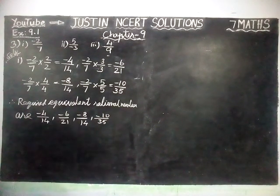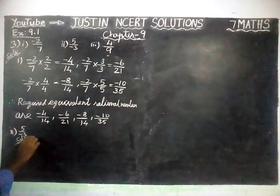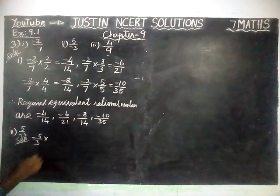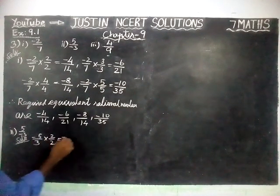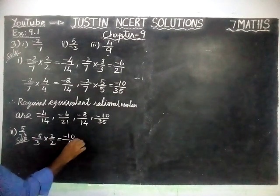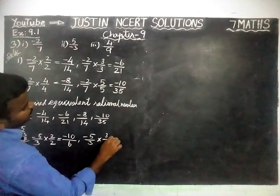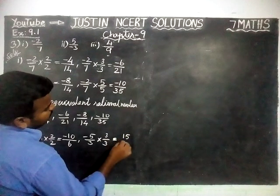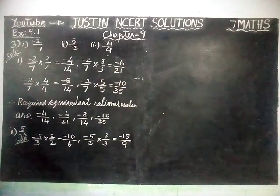Next we are going to solve the second question: 5 by minus 3. We are going to solve it one by one. Here, minus 5 by 3 into 2 by 2 is equal to: 5 2s are 10, minus into plus equal to minus, divide by 3 2s are 6. Next, minus 5 by 3 into 3 by 3 is equal to: 5 3s are 15, divide by 3 3s are 9, minus into plus equal to minus.